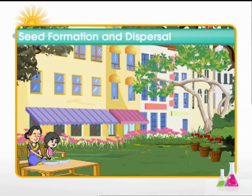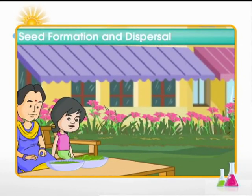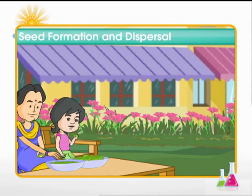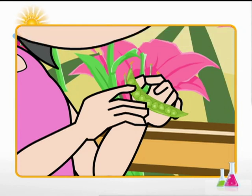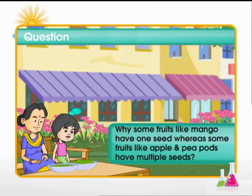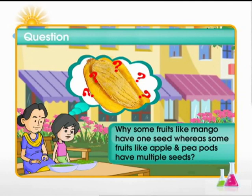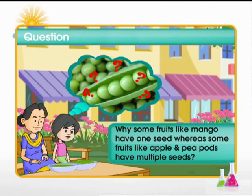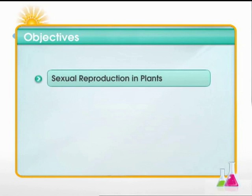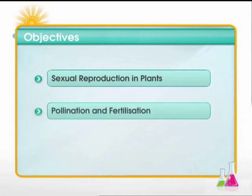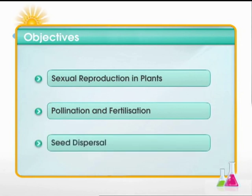A little girl is helping her mother take out the peas from pea pods. Each pea pod has many peas inside. The little girl wonders why some fruits, like a mango, have just one seed unlike a pea pod, or an apple where there are multiple seeds. Let's find an answer to that question as we learn about sexual reproduction in plants, pollination and fertilization, and seed dispersal.